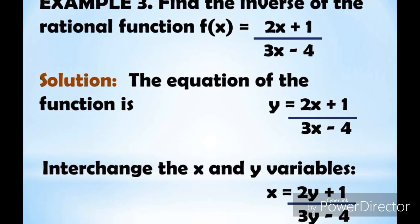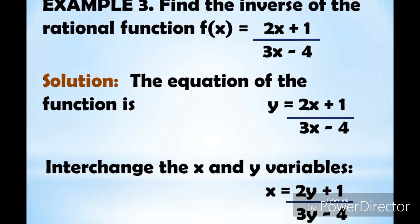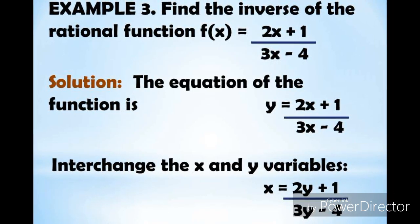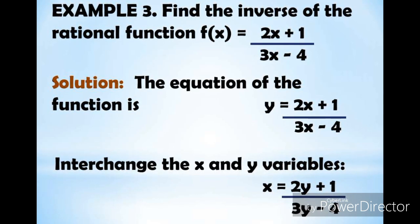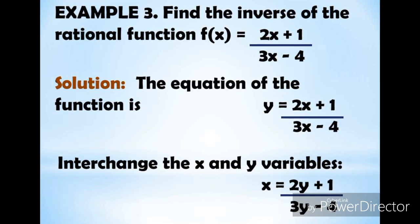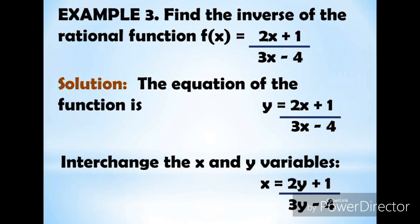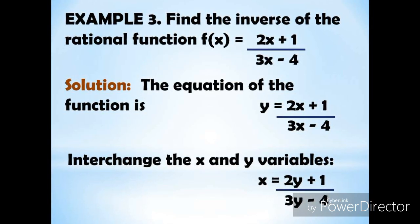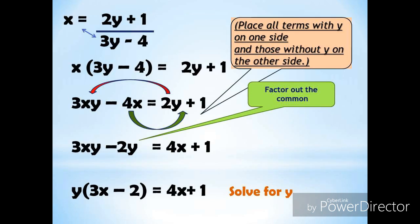Another example: find the inverse of the rational function f(x) = (2x + 1)/(3x − 4). Change f(x) to y, so y = (2x + 1)/(3x − 4). Then interchange the positions of x and y, giving x = (2y + 1)/(3y − 4). Cross multiply x and (3y − 4), so we have x(3y − 4) = 2y + 1. Simplifying: 3xy − 4x = 2y + 1.